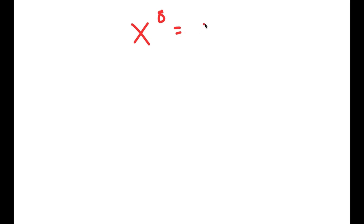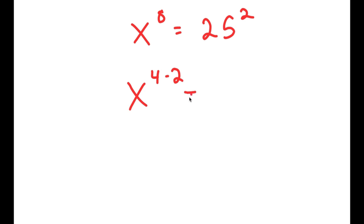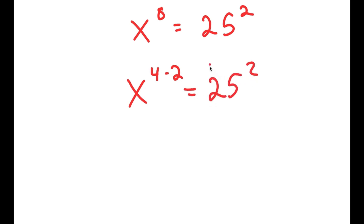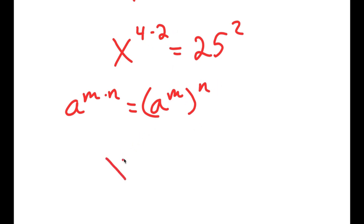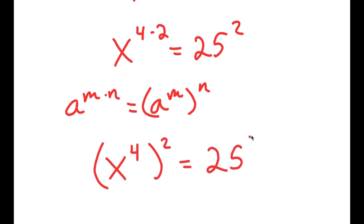In this video, I'm going to solve the equation x to the power of 8 is equal to 25 squared. To solve this, I'm going to first rewrite this as x to the power of 4 times 2 is equal to 25 squared. If I have something in the form a to the power of m times n, this is equal to a to the power of m to the power of n. So x to the power of 4 times 2 is equal to x to the power of 4 to the power of 2, and this is equal to 25 squared.